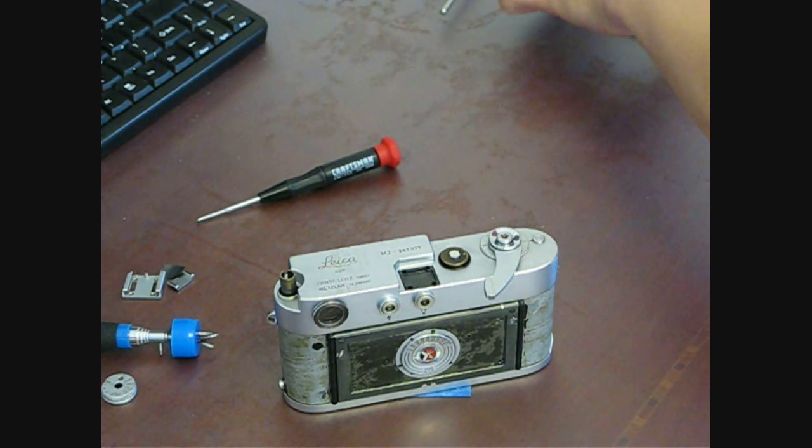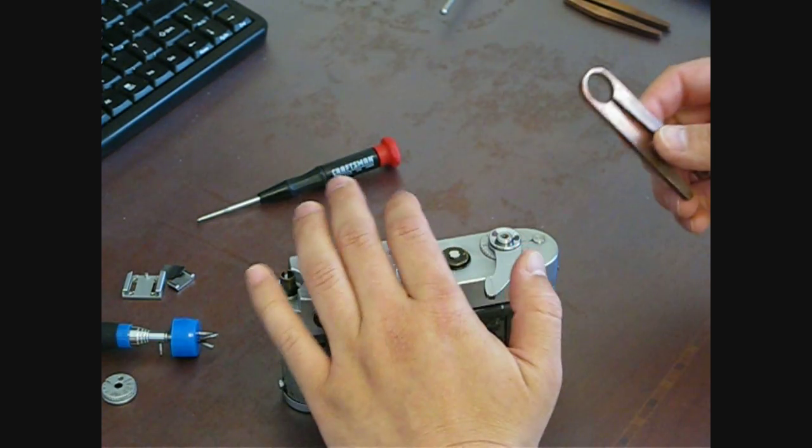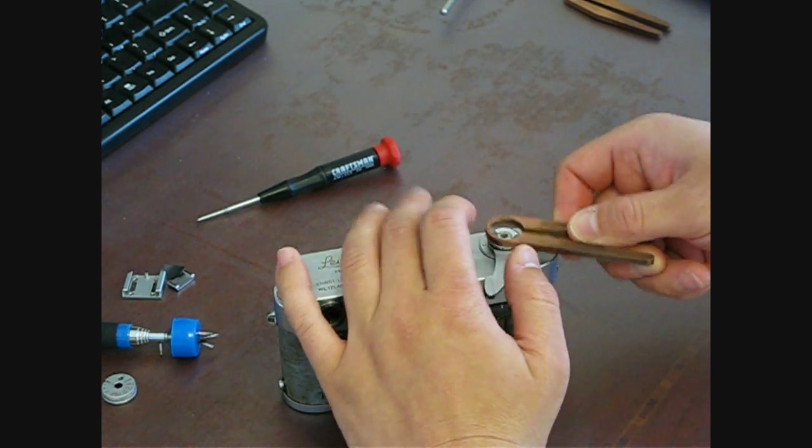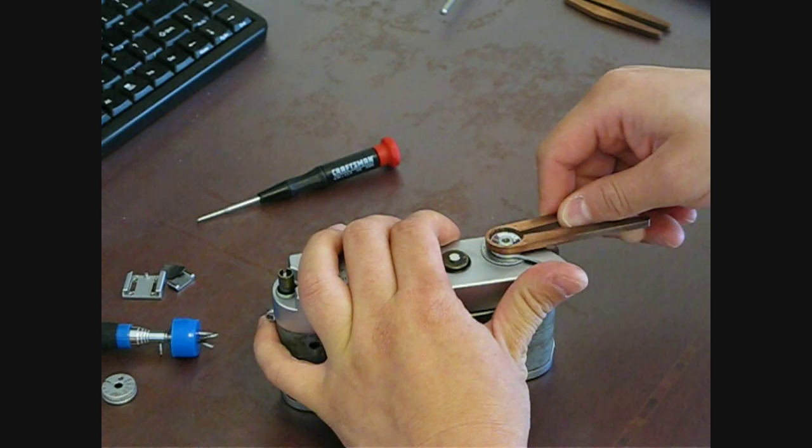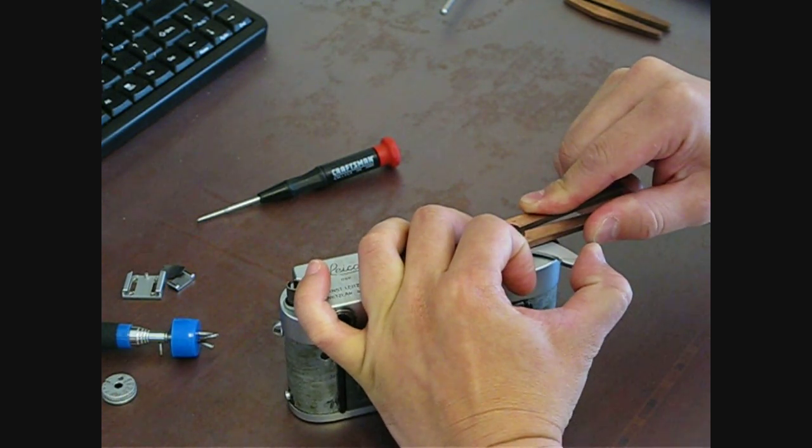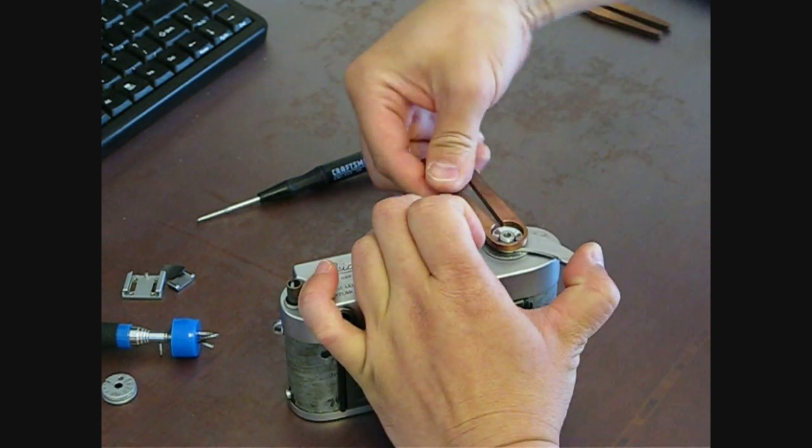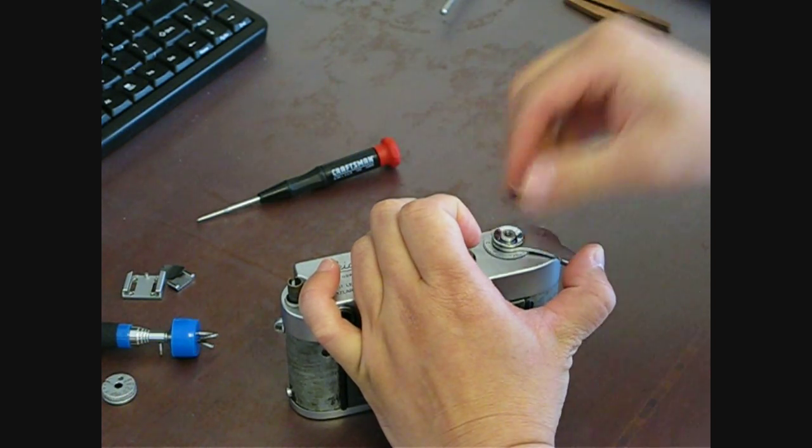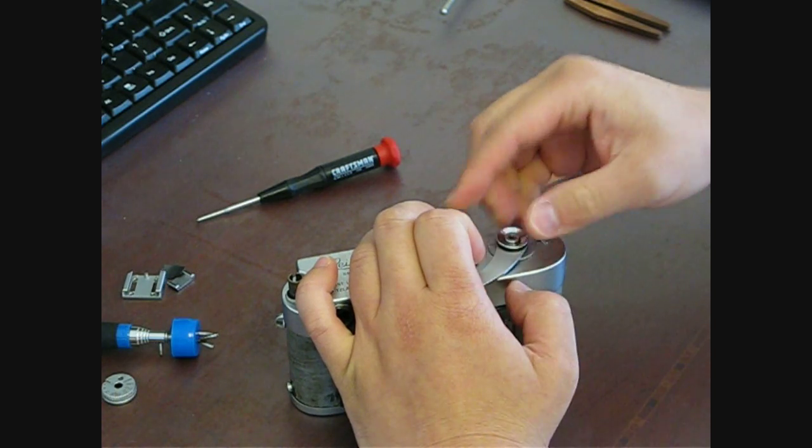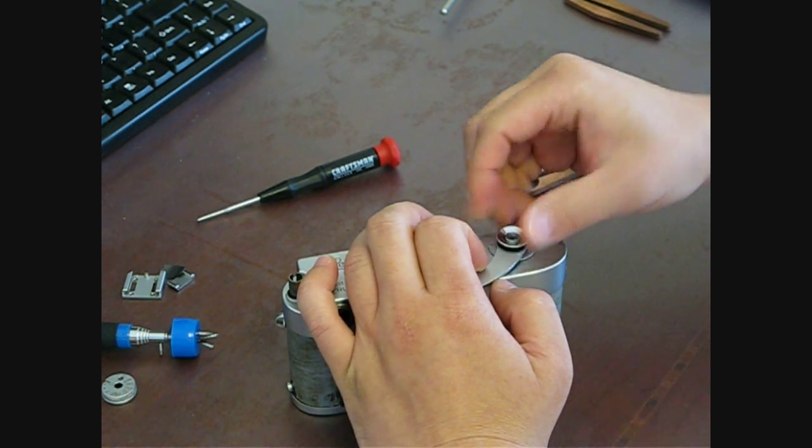And then finally, we're going to go ahead... Well, not finally. We're going to go ahead and take off the rewind lever. Once again, I like to cock it once and bring it back halfway to remove this lever arm retaining screw because you can actually damage the mechanism. And then we're going to go ahead and release that.